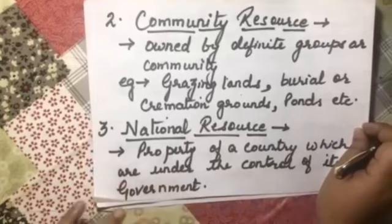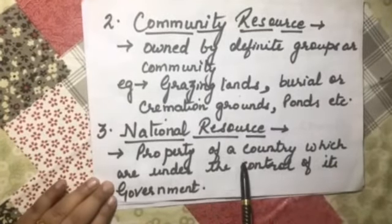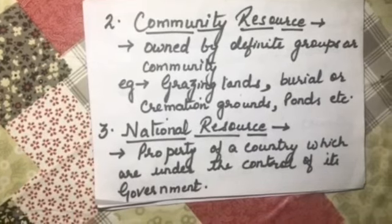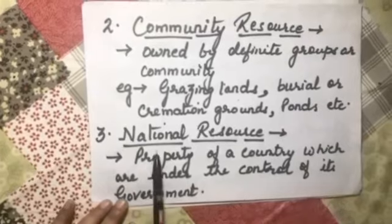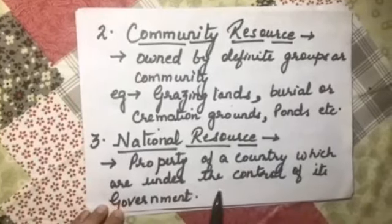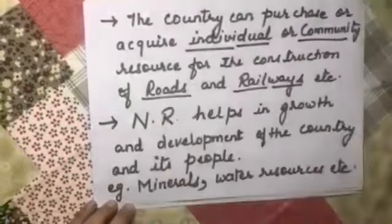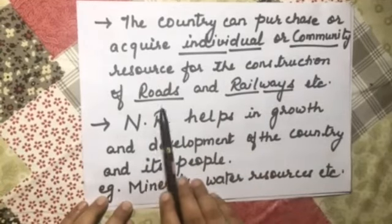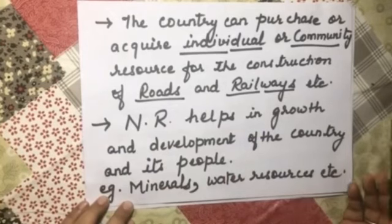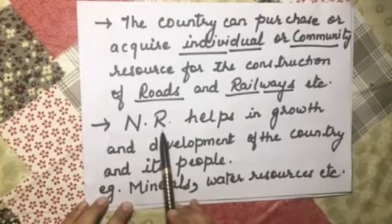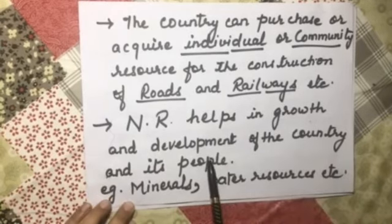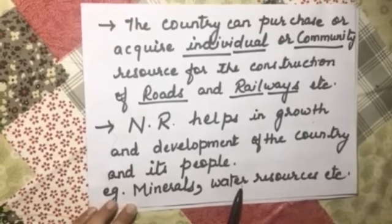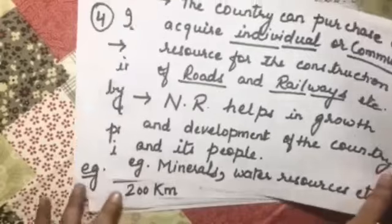Third is national resource, which is very important. The definition: national resources are properties of a country which are under the control of its government. The country can also purchase or acquire individual or community resources for the construction of roads, railways, airports, etc. In conclusion, national resources help in the growth and development of the country and its people. Examples include mineral and water resources.